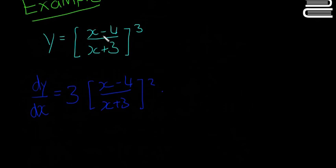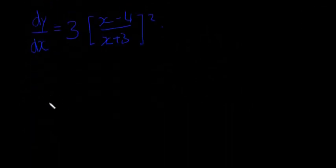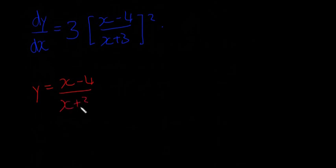Only problem is, this here isn't easy to differentiate. This is going to be the quotient rule in itself. So I'm going to actually write that out separately here in red pen. So x minus 4 over x plus 3. So I'm going to scroll down a little bit. So we're going to say if y is equal to x minus 4 over x plus 3, I'm just doing this separately so I can differentiate it, and then I can write it back in here.